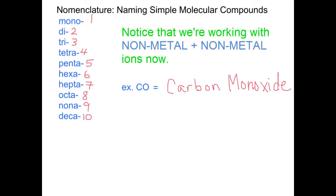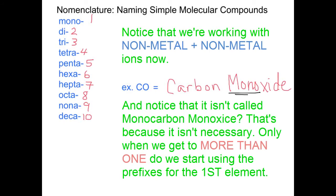Notice we are working with nonmetal plus nonmetal ions now. As well, you see it isn't called monocarbon monoxide, because the mono prefix is only needed when we get to more than one atom in the first element.